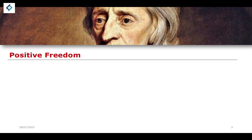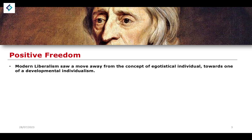We begin by looking at the delineation between positive freedom and negative freedom, which is a very important aspect of liberal thought. Modern liberalism saw a move away from the concept of human nature as egotistical individualism — the idea that individuals, like those described by John Locke, are inherently individualistic, acting in their own self-interests.